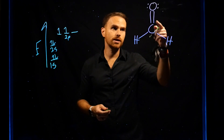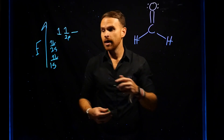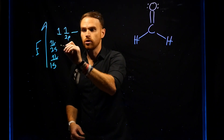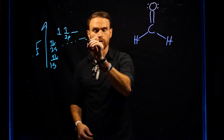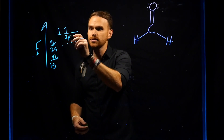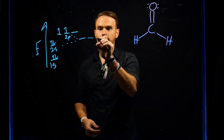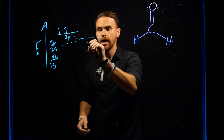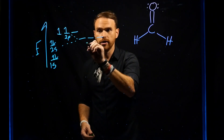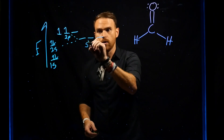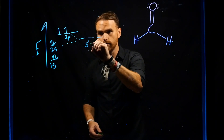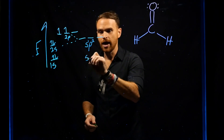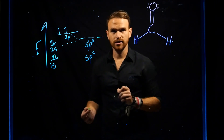Because carbon is making three different sigma bonds, it is going to combine three of these orbitals. The first one is always going to be the s orbital, and then the next two will come from the p orbitals. This generates three brand new hybridized orbitals. Because there are three of them — one s and two p — this gives rise to sp2 hybridization.